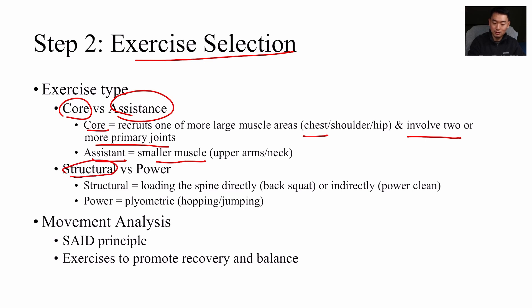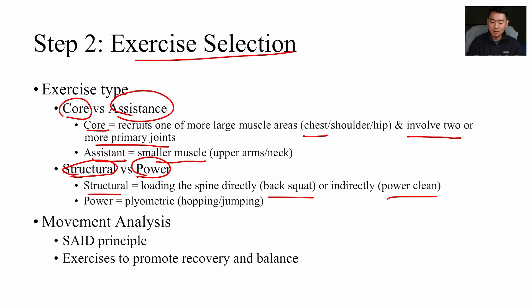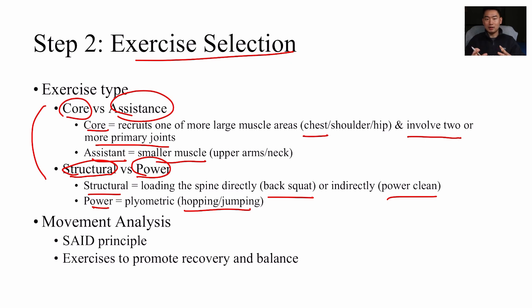We also have structural exercises and power exercises as another way to distinguish exercises. Structural exercises involve loading the spine directly — a back squat is a good example, where you're working against gravity while your spine is fully loaded. Or indirectly, like a power clean, using momentum to quickly bring the barbell up. Power exercises are those that create force in a very short amount of time, such as plyometric exercises like hopping and jumping.